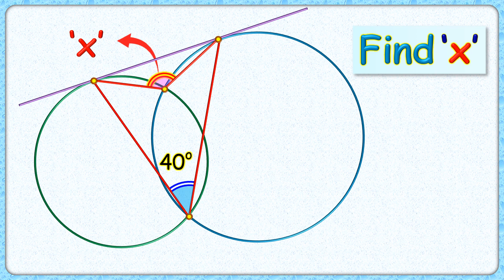Wow, this interesting question. Given to us are two circles intersecting each other at these two points. This purple line segment is the common tangent for the circles at these points of tangency. These are joined to these points of intersections. Given is this blue angle is 40 degrees. The exciting part is using this limited data we have to find the value of this red angle.